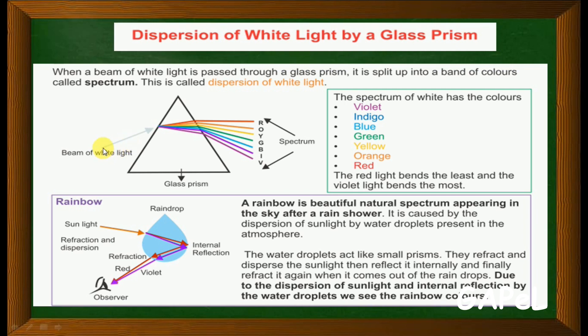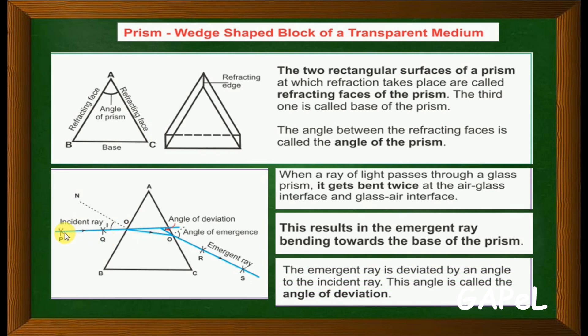When white light is incident on a prism, it splits up into a band of colors called a spectrum. This is called dispersion of white light. Basically, when white light passes through a prism, you get a spectrum of colors. The white light bends at all points.